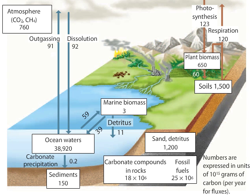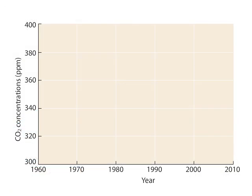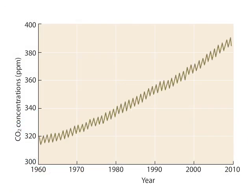Despite the fact that the ocean absorbs more carbon dioxide than it releases, atmospheric carbon dioxide measurements from on top of Mauna Loa, Hawaii, show an upward trend in carbon dioxide concentrations over the decades, with a current high exceeding 380 parts per million. Before the Industrial Revolution, the concentration of atmospheric carbon dioxide was probably about 265 parts per million.